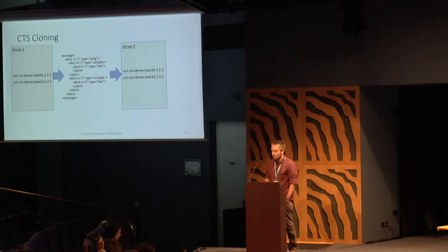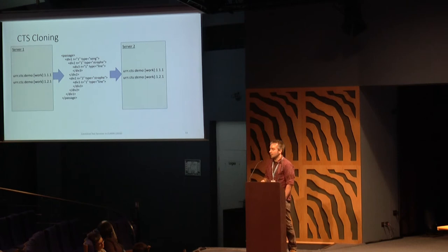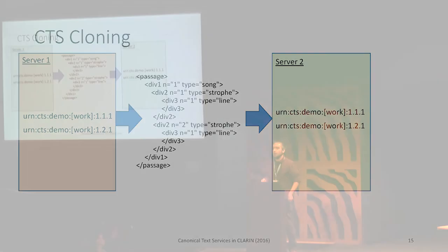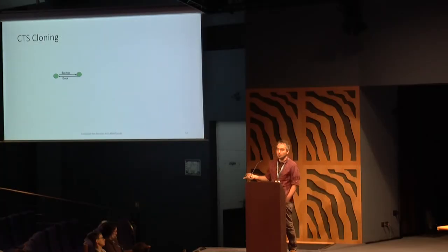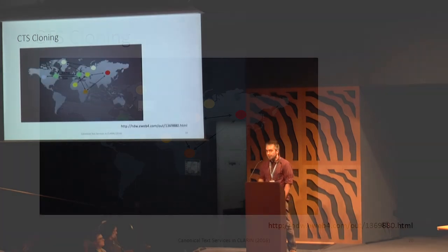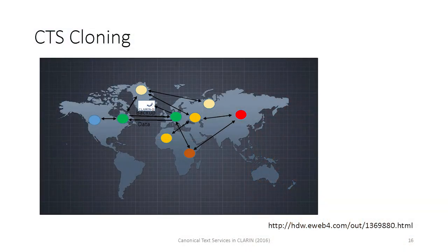One of the coolest features is CTS cloning. There's a certain output format that can be used to structure the data in your response, and this output format can be used as an input source for a new CTS instance. This way it's possible to clone one CTS instance, share the data, split the data over several instances, or combine CTS instances into a new one. And this has the potential to create a decentralized, global, public text repository where anyone can install a CTS server and pick the text they want.